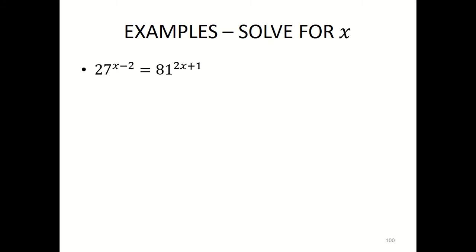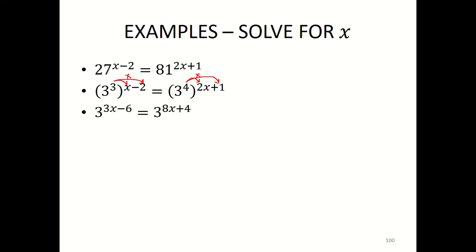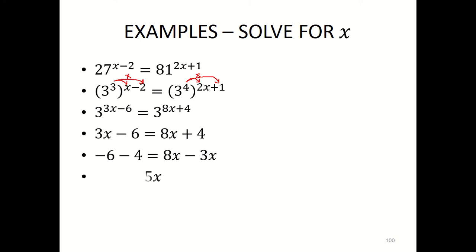Simplify — prime factorize 27 and prime factorize 81. You'll have 3 to the exponent of 3x minus 6 equals 3 to the exponent of 8x plus 4. The bases are the same — drop the bases and equate the exponents. You have 3x minus 6 equals 8x plus 4. Bringing like terms together: minus 10 equals 5x, so x equals minus 2.